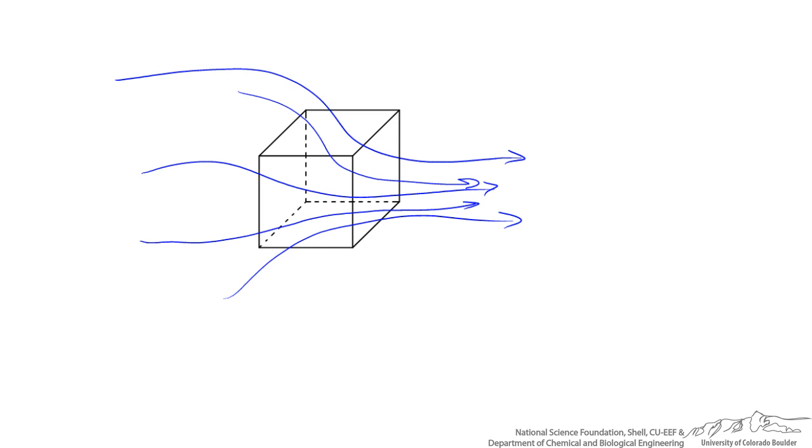The cube that we're imagining is a control volume, and we can imagine a control volume of any arbitrary shape, and more specifically, we can imagine a control volume that has any arbitrary volume, and that includes a volume that is infinitesimally small. And what I mean by that, I can imagine a cube that's this big, a cube that's this big, a cube that's a little bit smaller, and a cube that's as small as I could possibly imagine.